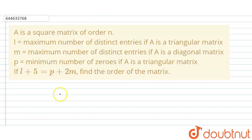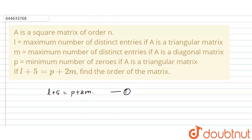We have to find the order of the matrix given the condition: l + 5 = p + 2m. So first I'm going to write down this given condition as equation number one.